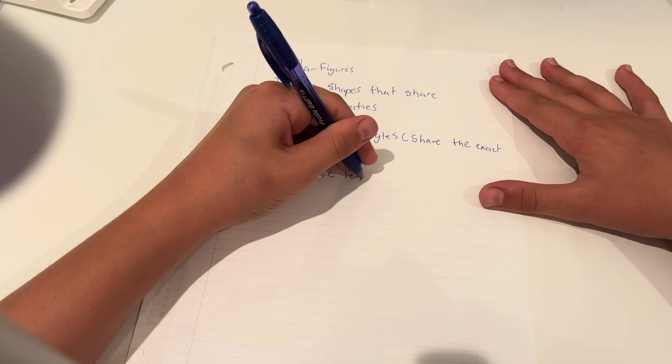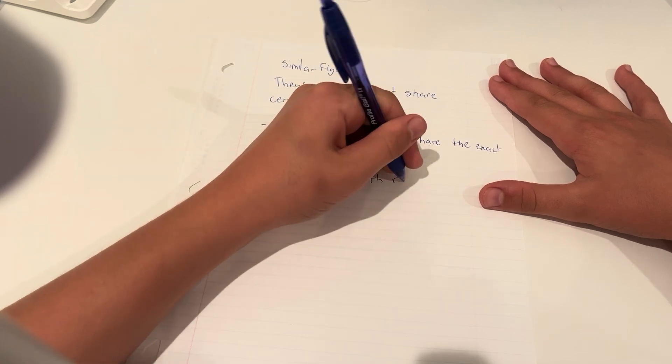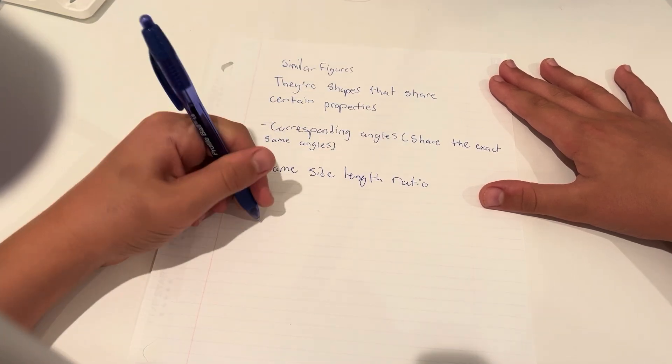And they share the same side length ratio. So I'm going to talk about what this means in a second. So let's take a look at two triangles.